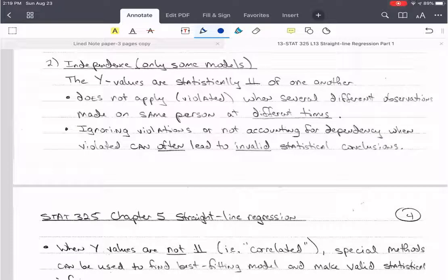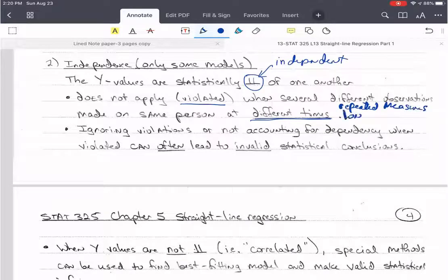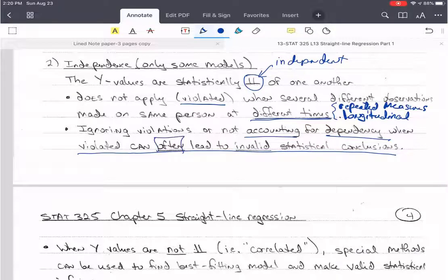So now, independence. This says that the y values are statistically independent. If you don't know, this means independent. The y values have to be statistically independent of each other. But this assumption can be violated when we're taking different observations on the same person over time. That's called a longitudinal or repeated measures. And they're a special case.